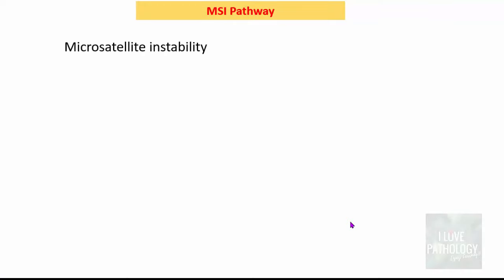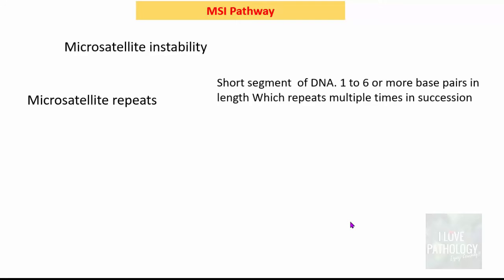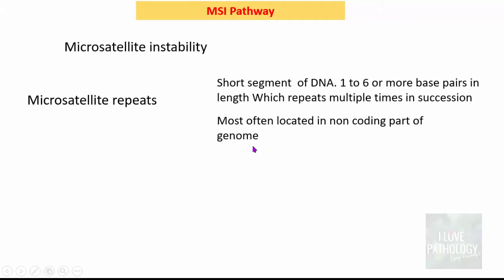The second important genetic pathway is the MSI pathway — microsatellite instability. Microsatellites are short segments of DNA, one to six or more base pairs in length, which repeat multiple times in succession in a given DNA molecule, most often located in the non-coding part of the genome.